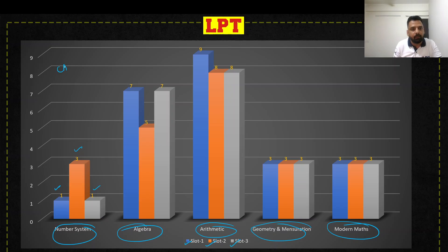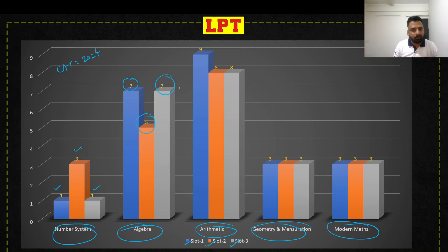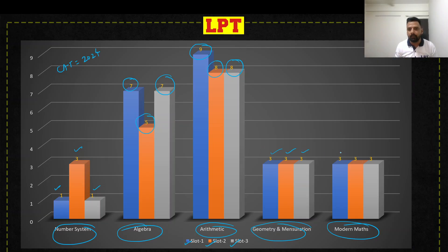In CAT 2024's breakup: number system — slot 1 had only 1 question, slot 2 had 3 questions, slot 3 had 1 question. Algebra — slot 1 had 7, slot 2 had 5, slot 3 had 7 questions. Arithmetic always has higher weightage — 9 questions in one slot, 8 in another, 8 in another. Geometry and mensuration were roughly equal last year, and modern maths (permutation-combination) had 3 questions per slot.